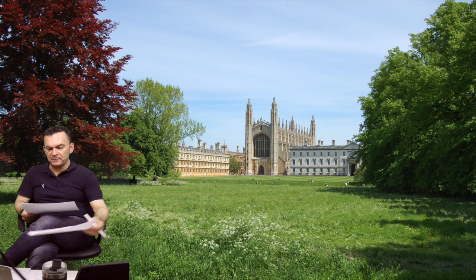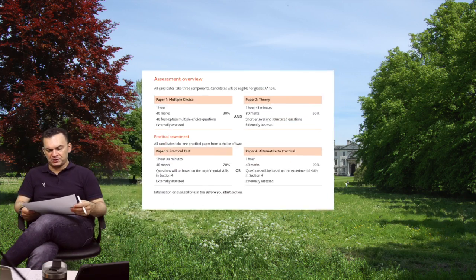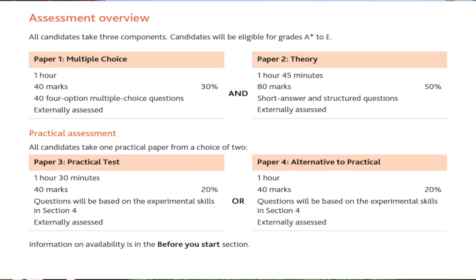The same idea applies to O Level. In O Level, paper one (multiple choice) has a 30% load, paper two has a 50% load, and paper three or four (practical) has a 20% load. There is no difference in the load percentages between IGCSE and O Level — both use the same 30%, 50%, 20% distribution.